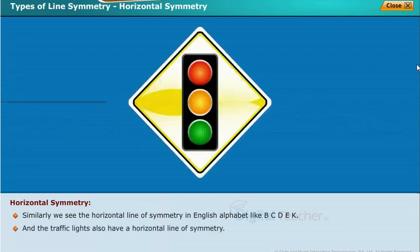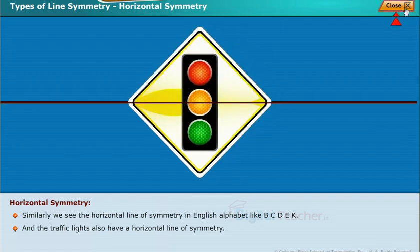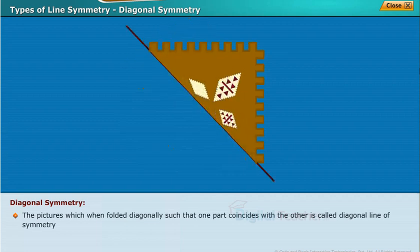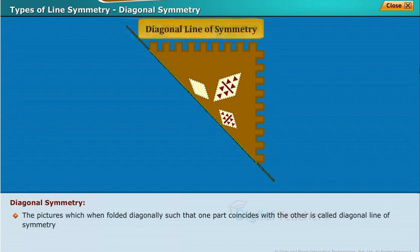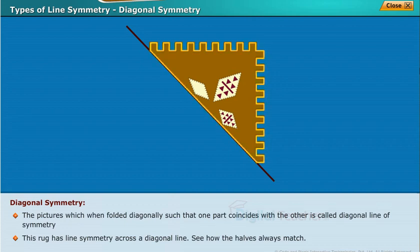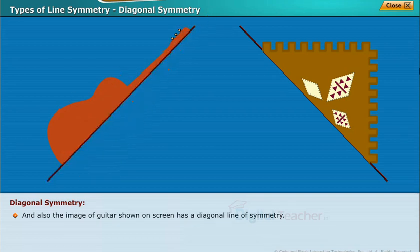Traffic lights also have a horizontal line of symmetry. Diagonal symmetry: a picture which when folded diagonally such that one part coincides with the other is called diagonal line of symmetry. For example, this rug has line symmetry across a diagonal line — see how the halves always match. The image of a guitar shown on screen also has a diagonal line of symmetry.